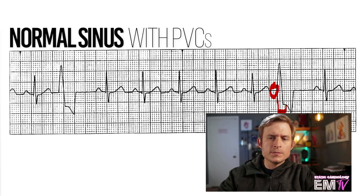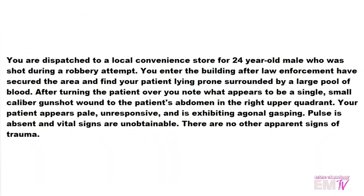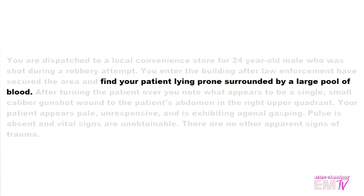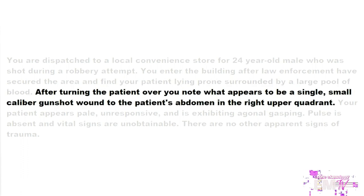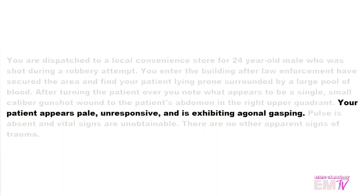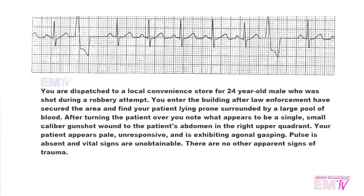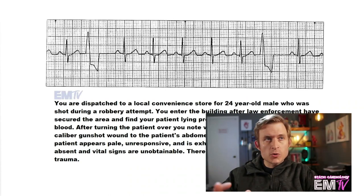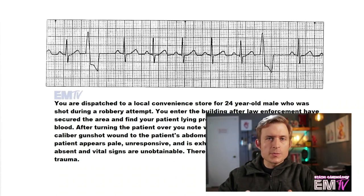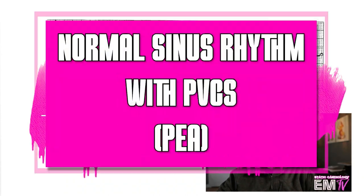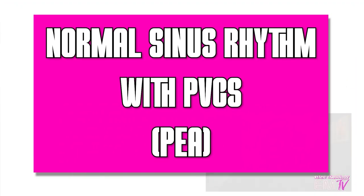Now let's go ahead and take a look at the scenario. We're dispatched to a convenience store for a 24-year-old male who was shot during a robbery attempt. We find the patient laying prone, surrounded by a large pool of blood. After turning them over, we note what appears to be a single small caliber gunshot wound to the patient's abdomen in the right upper quadrant. The patient appears pale, is unresponsive, and exhibiting agonal gasping. Pulse is absent, and all other vital signs are unattainable. Based on the scenario and the fact that my patient is pulseless, I don't need to determine if this patient is stable or unstable. The pulseless algorithm speaks for itself. So my final diagnosis here for Static Cardiology is going to be a normal sinus rhythm with PVCs, but the patient is in PEA — pulseless electrical activity.